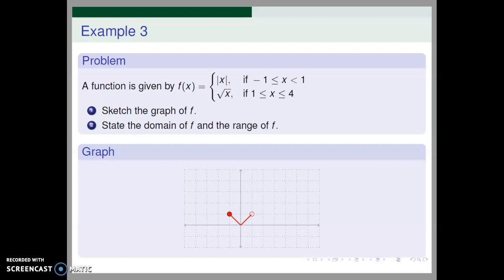To find f(1), we use the square root function. So f(1) is the square root of 1, which is 1, and we fill in the point (1, 1) on the graph.